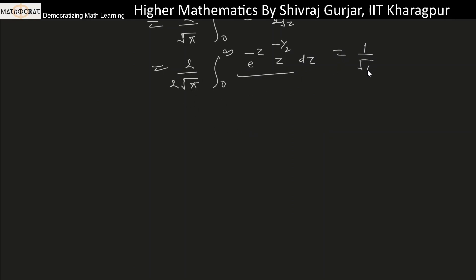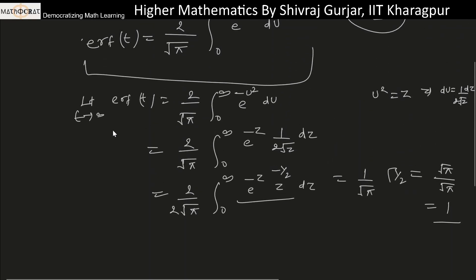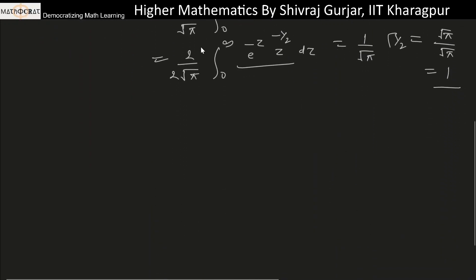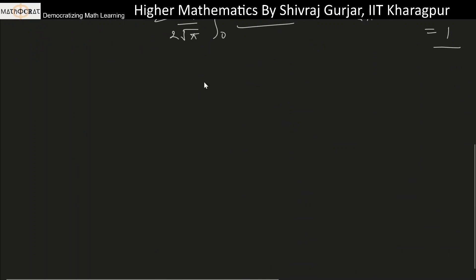This can be written as two by root pi times one half times the integral of e to the power minus z times z to the power minus half dz. The two and two cancel, giving one by root pi times gamma of one half. Since gamma of one half is root pi, we get root pi over root pi which equals one.